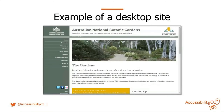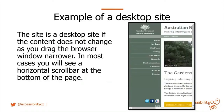This is an example of a desktop site: the Australian National Botanic Gardens. You've got navigation on the left, a header, a beautiful picture in the middle, and some text. If you make the screen smaller by dragging the window edge, nothing changes — you just cut off information as if it's underneath the scroll bar. That's a desktop site.